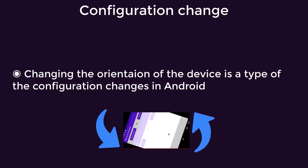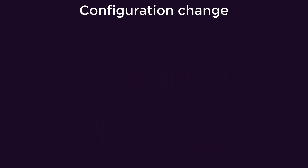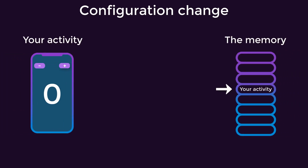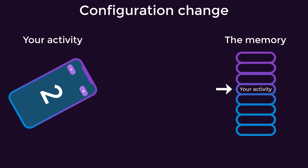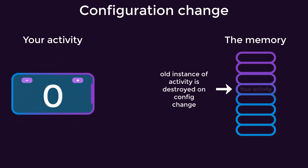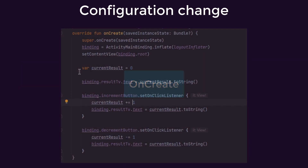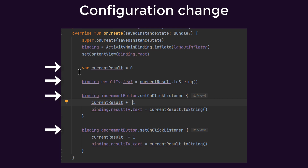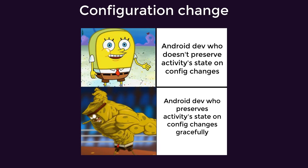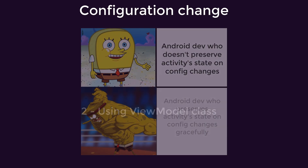But why has the value been reset to zero? Some configuration changes in Android recreate the whole activity — that means your activity is destroyed and recreated from the beginning, which leads to calling onCreate from the start. So everything within onCreate will be reset to its initial values. Handling configuration changes and preserving activity state is an essential thing for every Android developer.